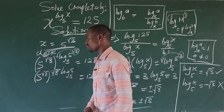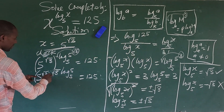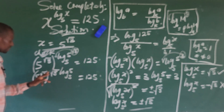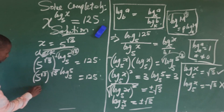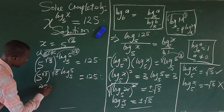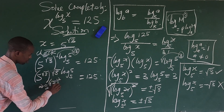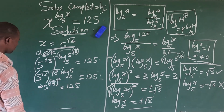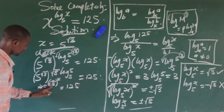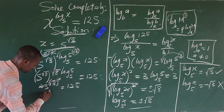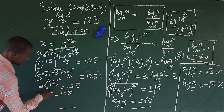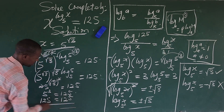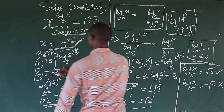Since log_5(5) equals 1, we can multiply the powers: √3 times √3 equals √9 equals 3. So we get 5^3, which equals 125. This equals 125, confirming that x = 5^(√3) satisfies the original equation.